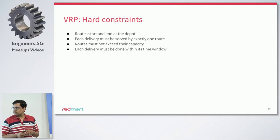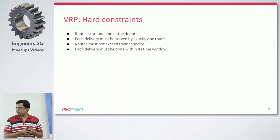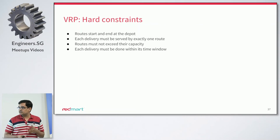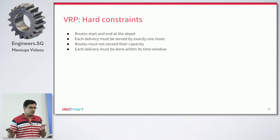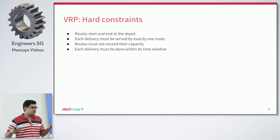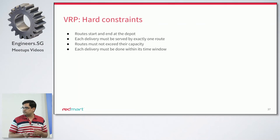This is a standard constraint optimization problem. Some constraints are called hard constraints because if violated the solution is infeasible and cannot be used. The routes must start and end at the depot location for each vehicle, each delivery must be served by exactly one route, the van capacity must not be exceeded, and each delivery must be done within its time window.